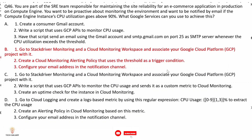Option A: create a consumer Gmail account, write a script that uses GCP APIs to monitor CPU usage, and have that script send an email via smtp.gmail.com on port 25 whenever CPU utilization exceeds the threshold. This is not correct because using a consumer Gmail account for GCP is difficult to manage — G Suite accounts are recommended. This approach requires manual maintenance of the script and is not recommended.